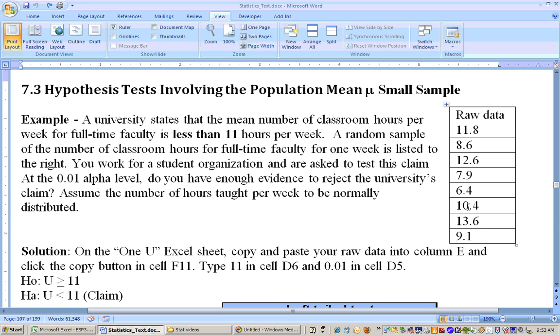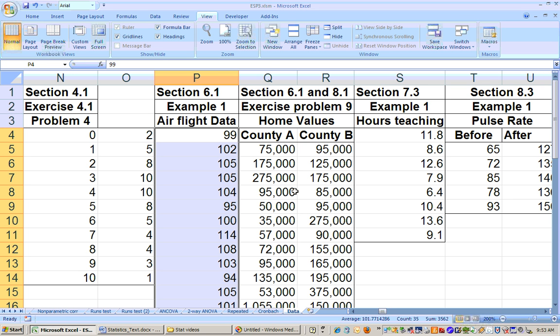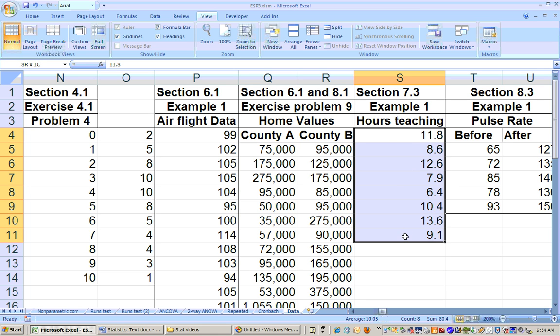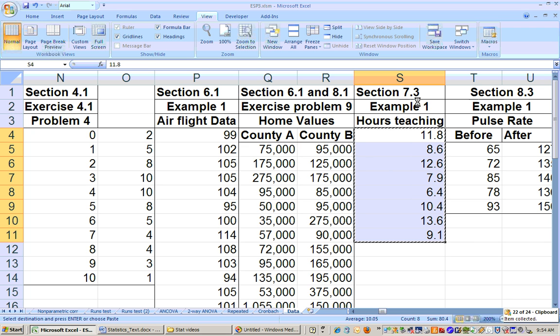Now, this data here is on your data sheet on the Excel sheet. So on the Excel sheet, if you go clear up to the end, you can do that by clicking right here. That takes you to the last sheet. You can be on the data sheet. And then on that, you'll find a little sheet here that says 7-3 example one hours teaching. So let's get this data right here. Copy it.